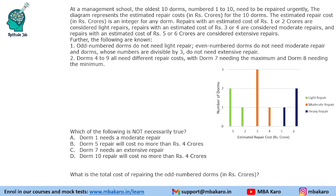Repairs with an estimated cost of 1 or 2 crores are called light repairs, as shown in the graph. Repairs with an estimated cost of 3 or 4 crores are considered moderate repairs, and the ones with a cost of 5 or 6 crores are considered extensive repairs. So there are 3 categories: light, moderate, and extensive.